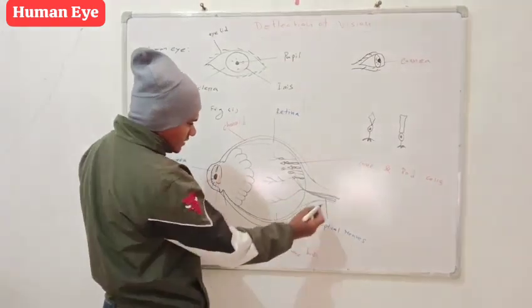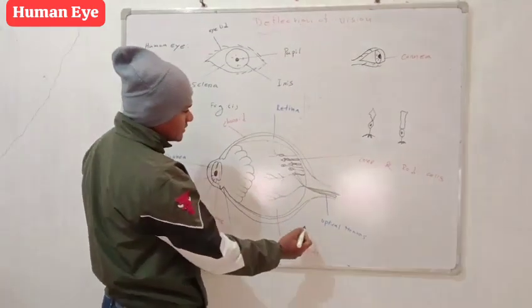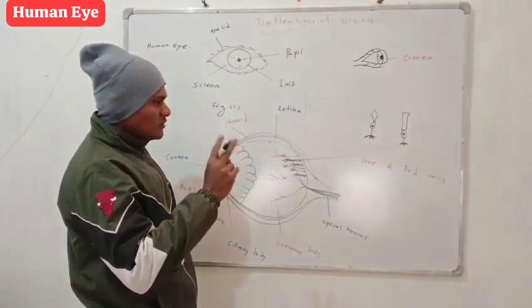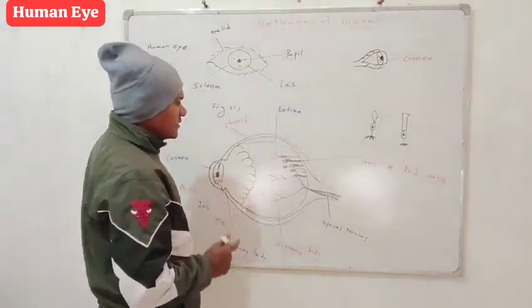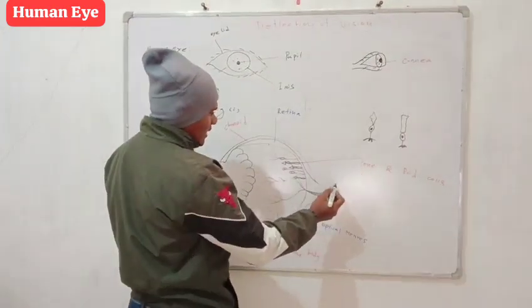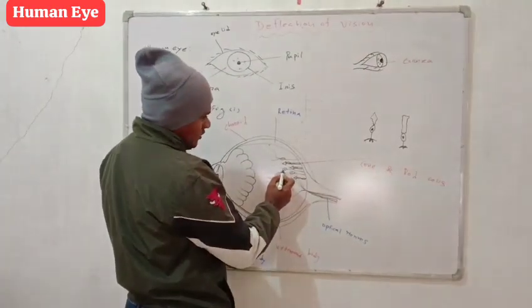And these nerves are known as optical nerves. And in this area, two important cells are there. This type of cells is called cone. And this one is rod.